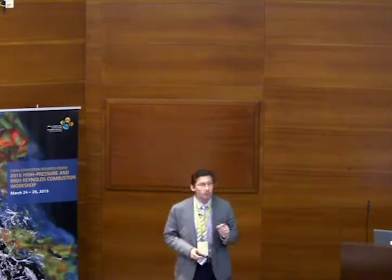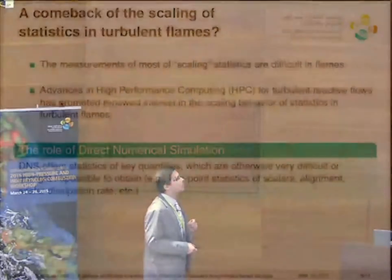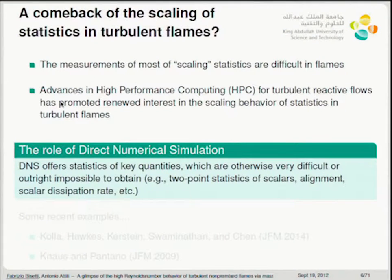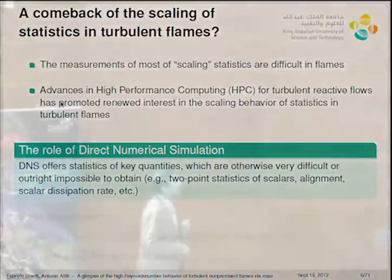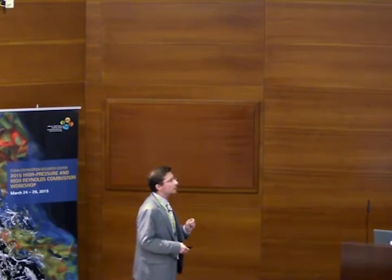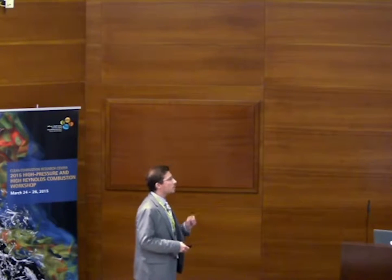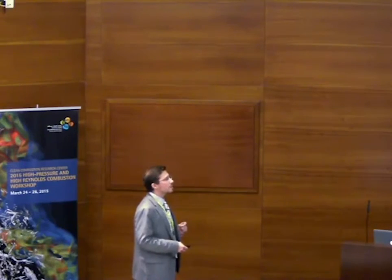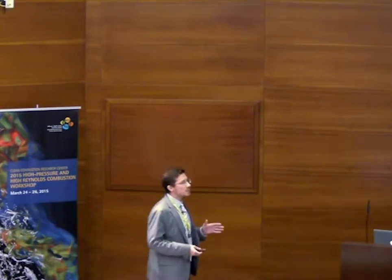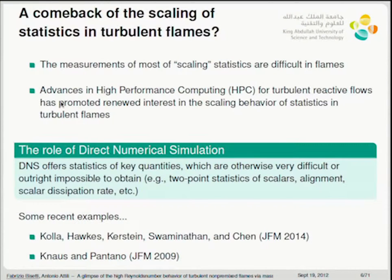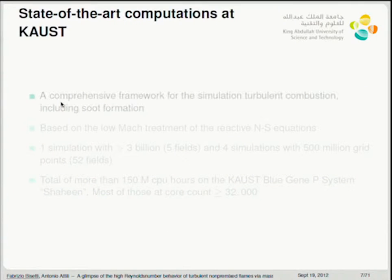We have a real opportunity to investigate and address fundamental questions. DNS offers statistics of key quantities which are otherwise very difficult or outright impossible to obtain. Some recent examples I look up to are the work by Colla and co-workers — including Evert here — as well as the earlier work by Knauss and Pantano. In both works, the authors try to figure out based on scaling arguments the similarities between turbulent flames and what we know from incompressible flows. I think we should do a lot more of that.